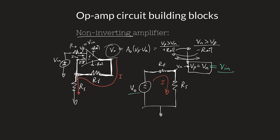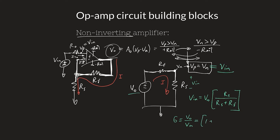Applying the voltage divider: V_in = V_out × R_S / (R_S + R_F). Rearranging to find the gain V_out / V_in, we get the non-inverting amplifier gain: 1 + R_F / R_S. The resistor of interest (R_S) is always on top in the divider, and the gain is always greater than one for a non-inverting amplifier.